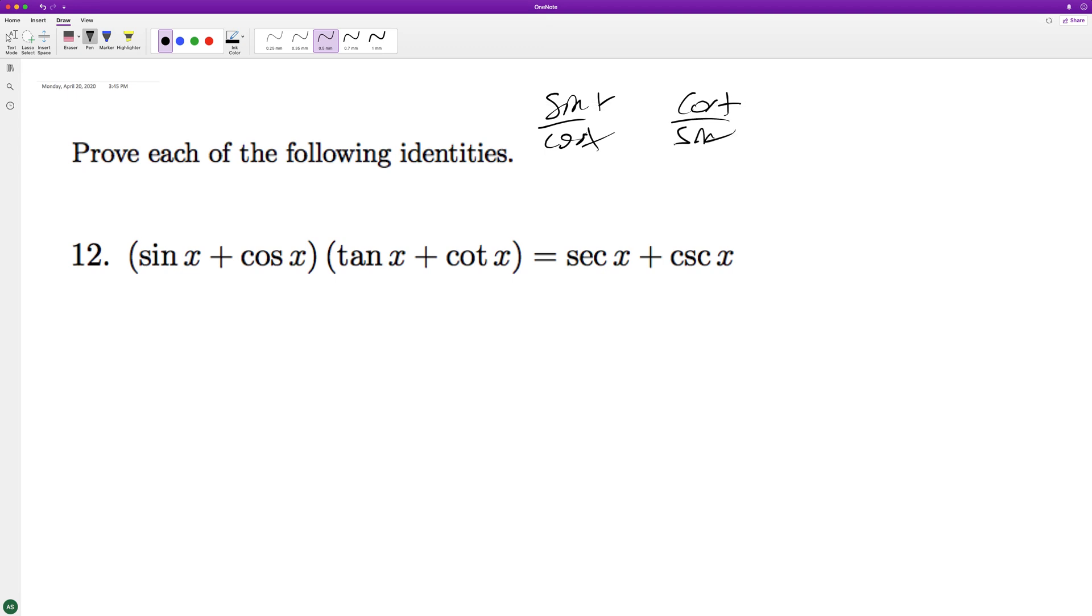So when we distribute, we know what happens. So sine of x tangent, this ends up being sine squared x over cosine of x, plus cosine of x because the sine on the bottom cancels, plus sine of x, plus cosine squared of x over sine of x.